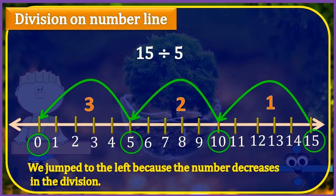Mathematically, this process can be represented as 15 divided by 5 is equal to 3. This is how we divide the number by another number on the number line.